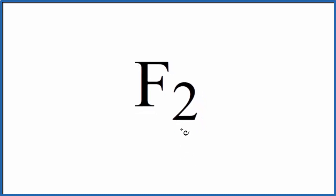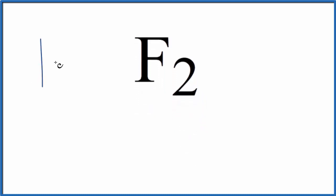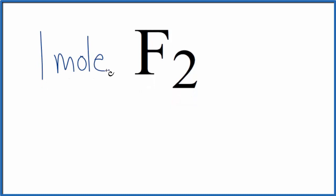Sometimes you'll be asked how many moles of atoms are in one mole of F2. One mole of atoms has Avogadro's number. So since we have two fluorine atoms here,